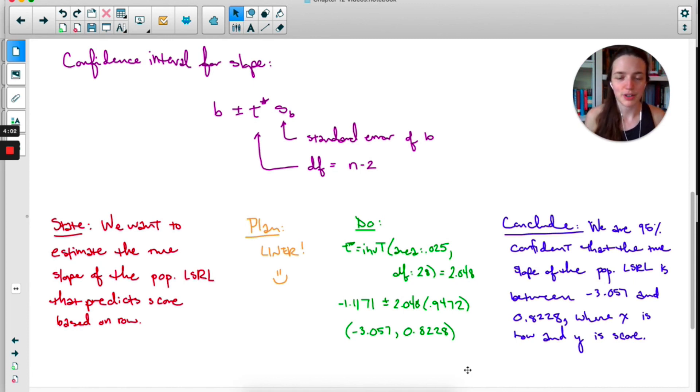So most of this is a review. The biggest differences are obviously the plan step is super different than anything we've done before. Calculating t* involves n-2, and then the other different thing is reading the Minitab output. Those are the parts you might want to review before going on.